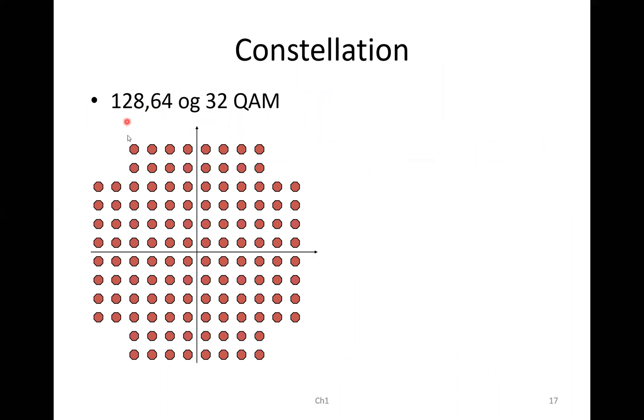And then we have the constellation diagrams. We have 128, 64 and 32 QAM. Here you see 128. Here you see 64. Well, let me count. One, two, three, four, five, six, seven, eight. Yeah, it's 64.